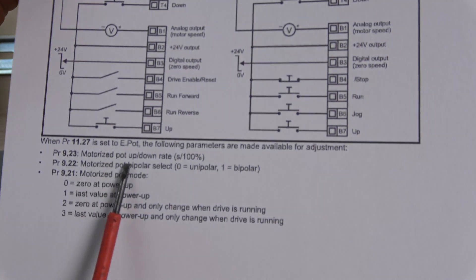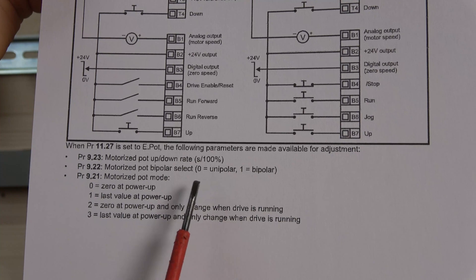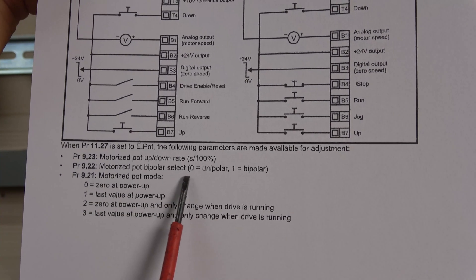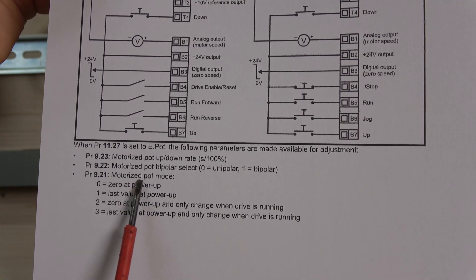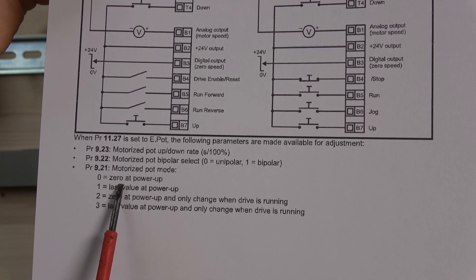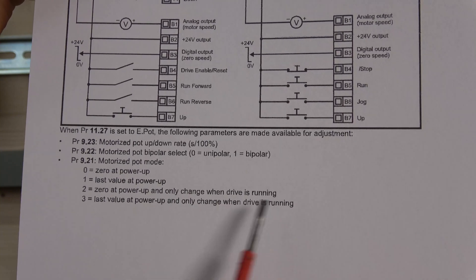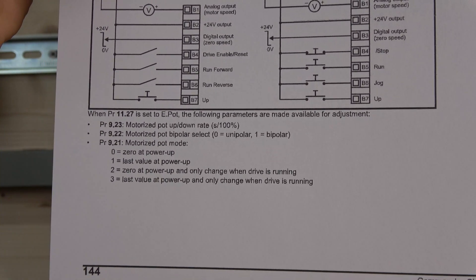In parameters 62, 61, 62, and 63, that pretty much explains your motorized pot download rate, which is how sensitive the button is going to be, motorized pot bipolar selection, and motorized pot mode. You can have zero power up, last value at power, and how it saves your values as your speed goes up and down.